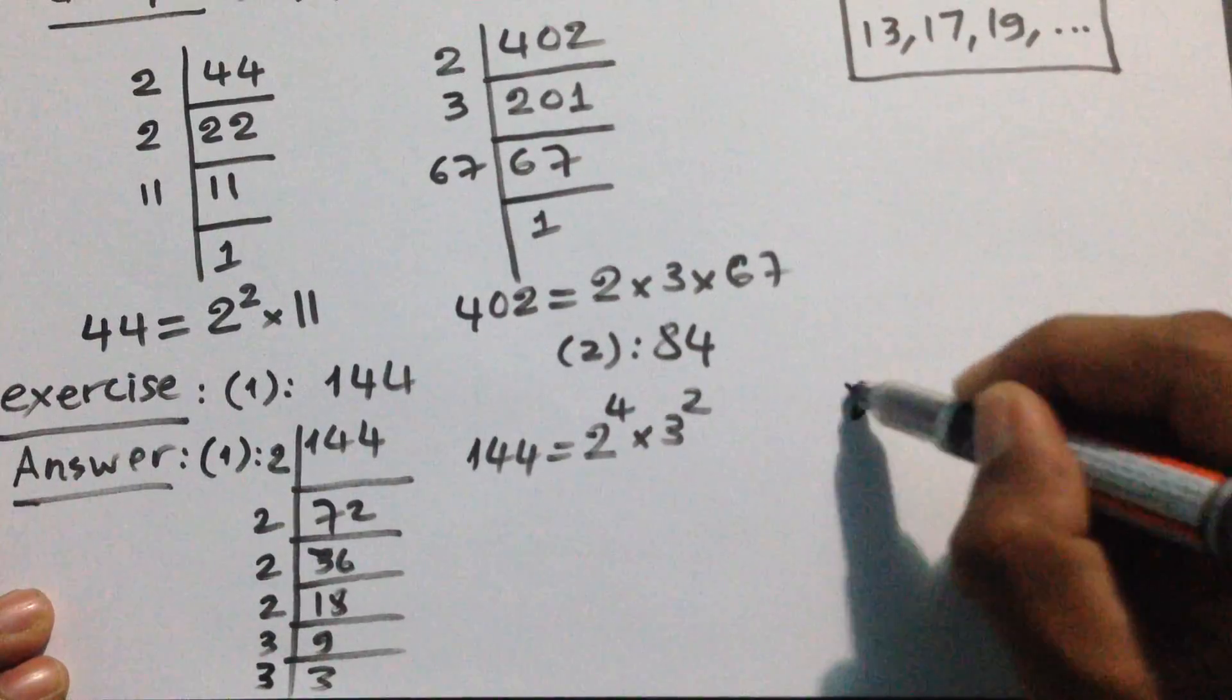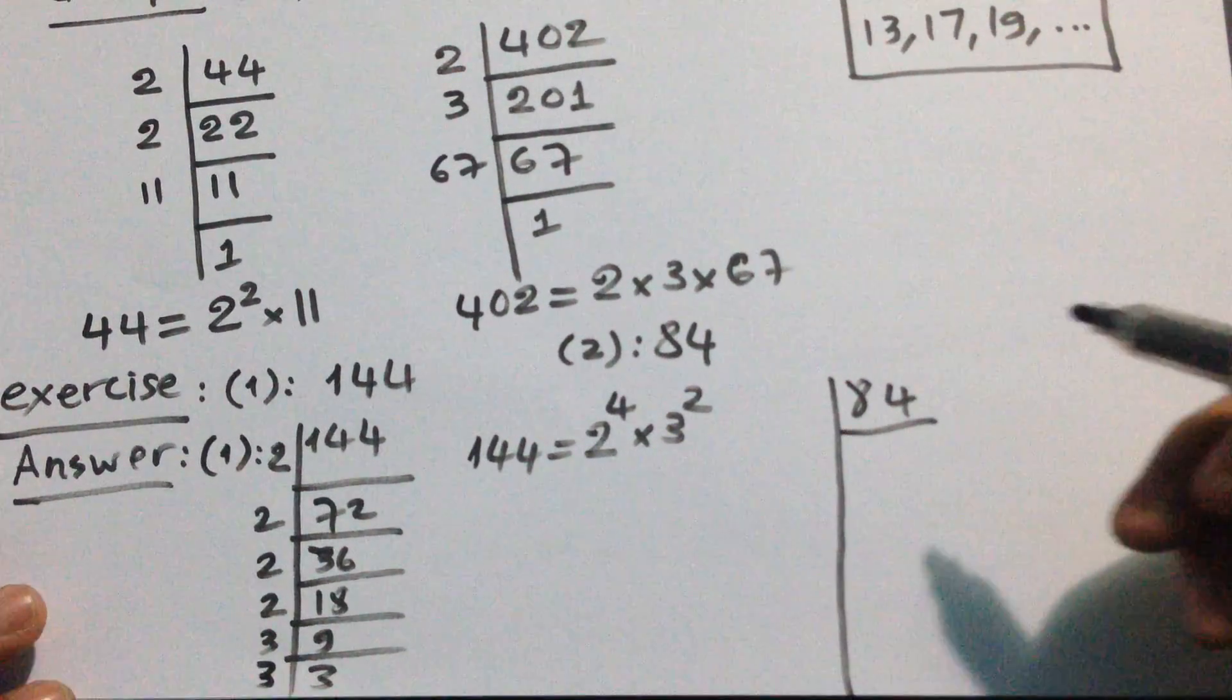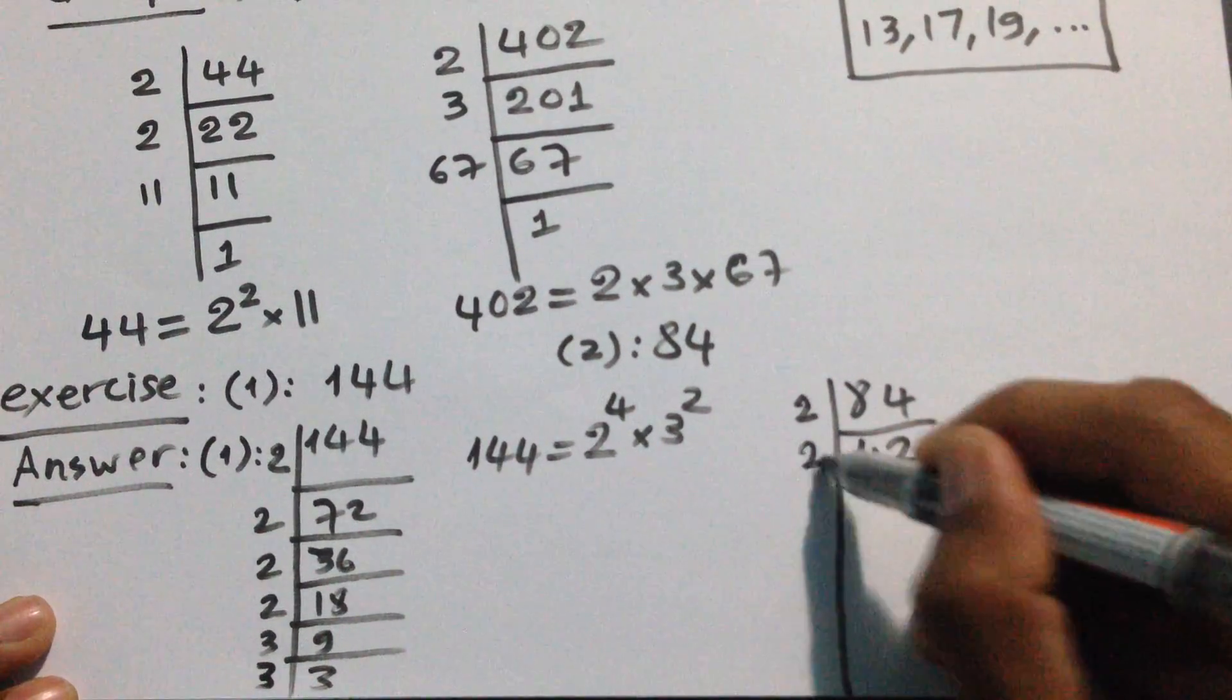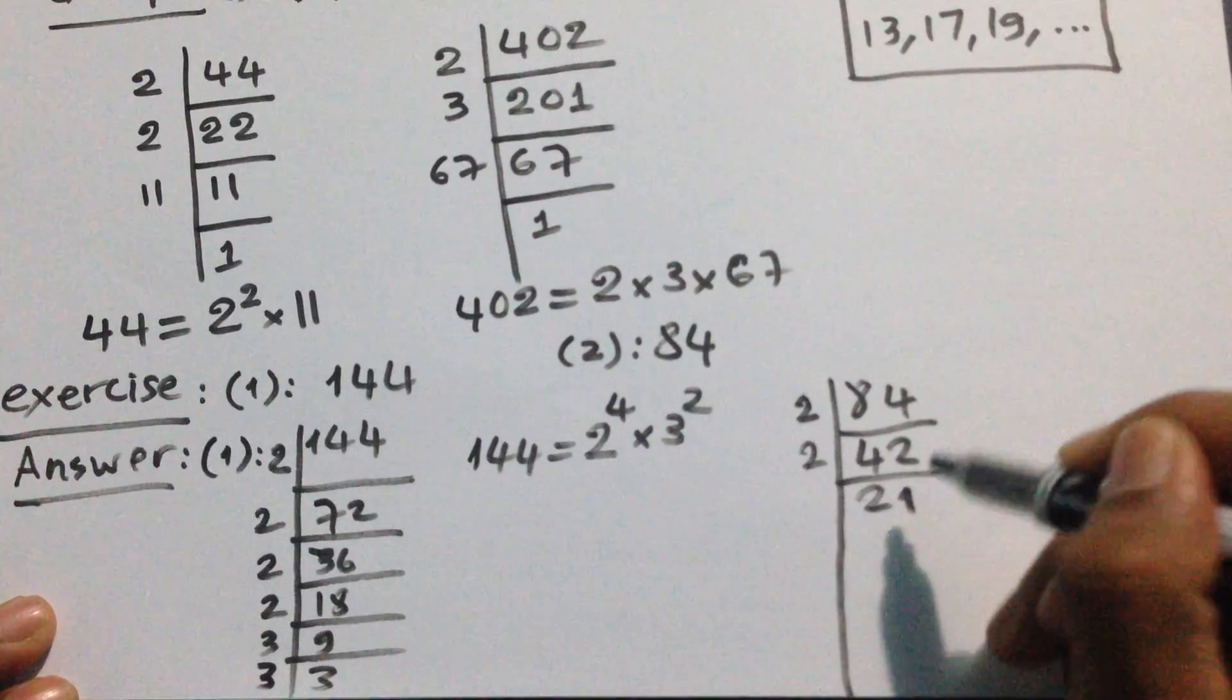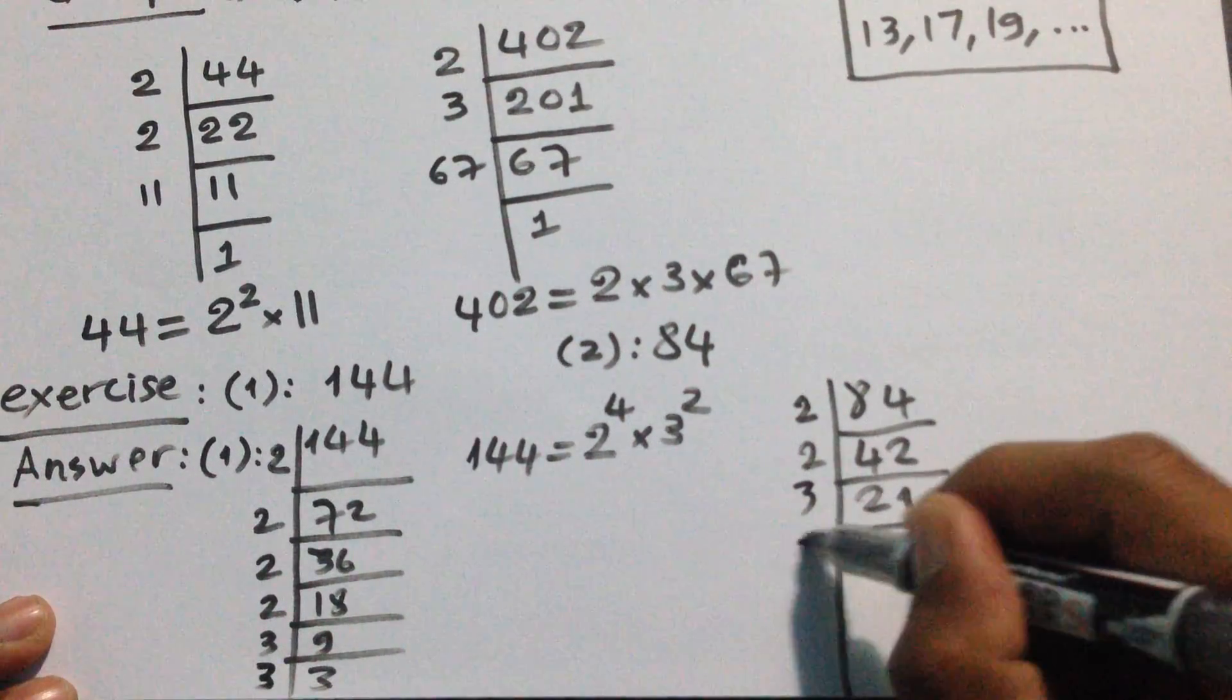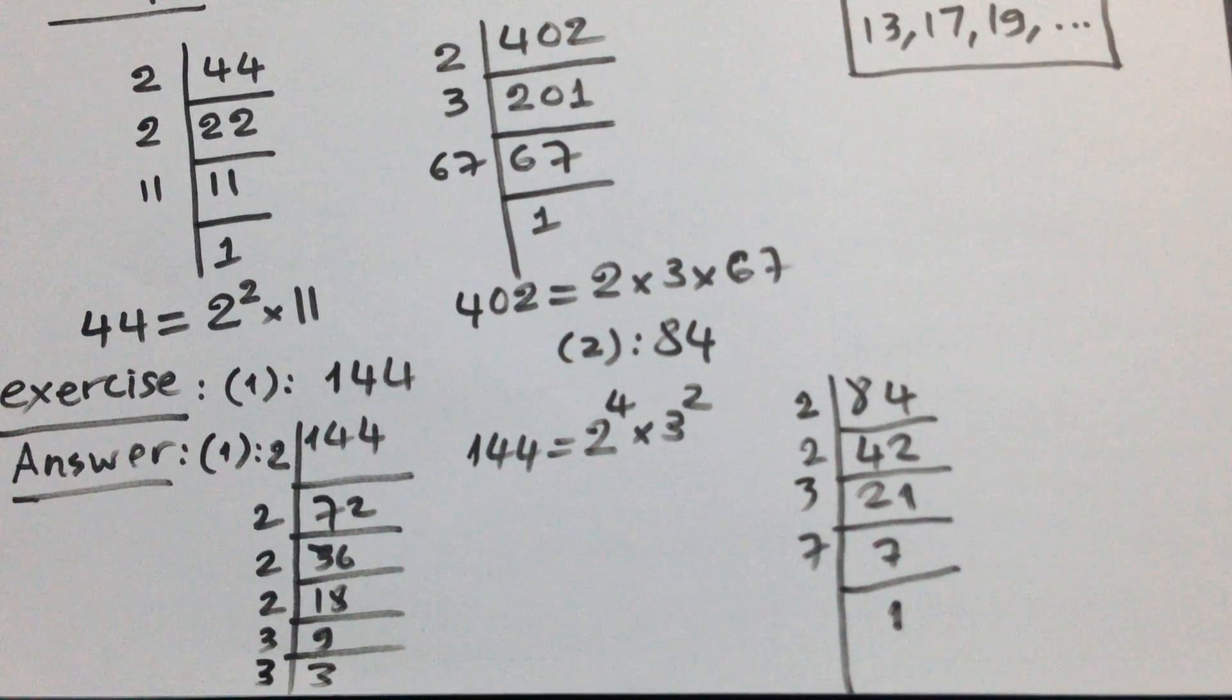How about 84? 84 can divide by 2, it's 42. Can divide by 2, it's 21. It is 3, can divide by 7. 7, it is equal to 1.